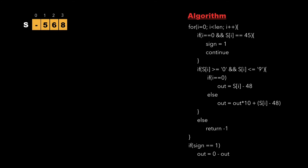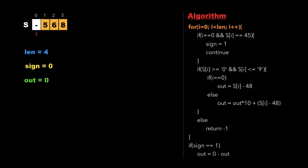Consider a string whose characters are minus, 5, 6, 8. The right side of the screen shows the algorithm. We store the string length in a variable called 'length' and declare two more variables — 'sign' and 'out' — initialized to 0. We traverse the string from i=0. At i=0, we check if it is the first character and its value is minus (ASCII 45). This condition is true, so we update sign to 1 and continue.